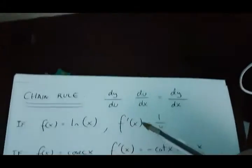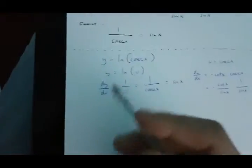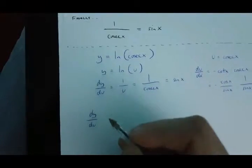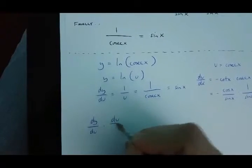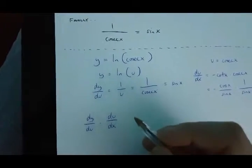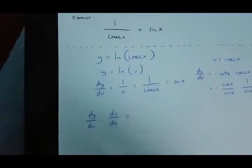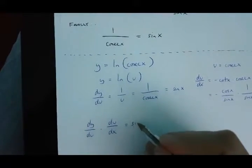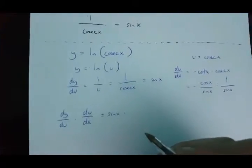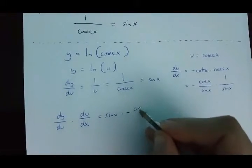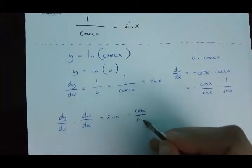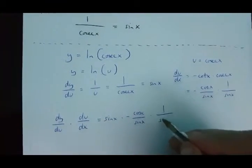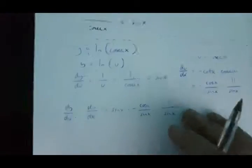So, let's use the chain rule. Well, turns out that dy/du times du/dx, which is dy/dx, is going to be equal to sin x times minus cos x over sin x times 1 over sin x.